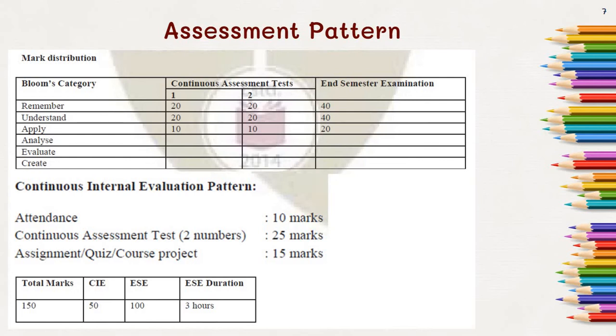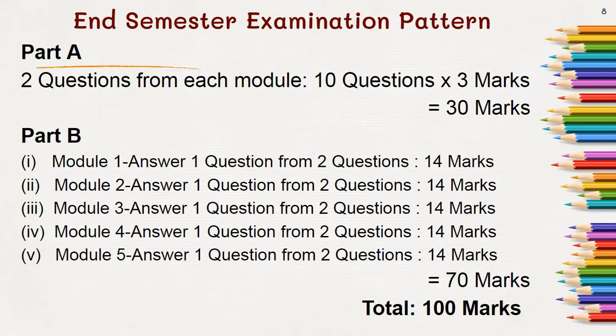The end semester examination duration is 3 hours. There will be two parts: Part A and Part B. In Part A, there will be two questions from each module, so there will be 10 questions of 3 marks each, totaling 30 marks. In Part B, you have to answer one question out of two questions from each module, and each question carries 14 marks. So in Part B, a total of five questions you have to answer, each carrying 14 marks, making the total for Part B 70 marks. The grand total is 100 marks.